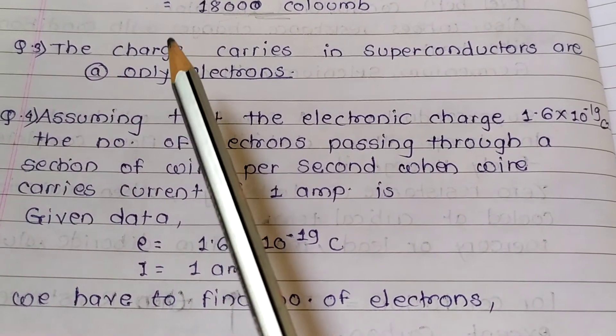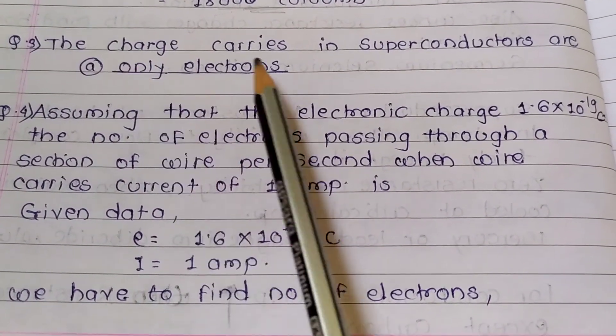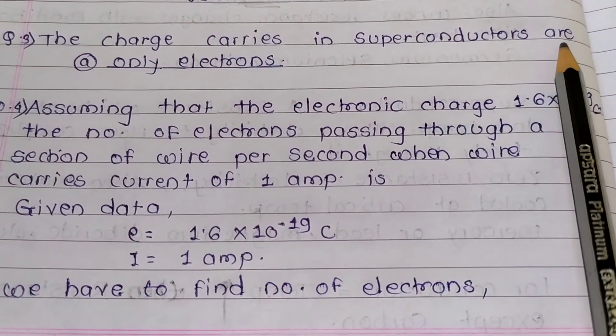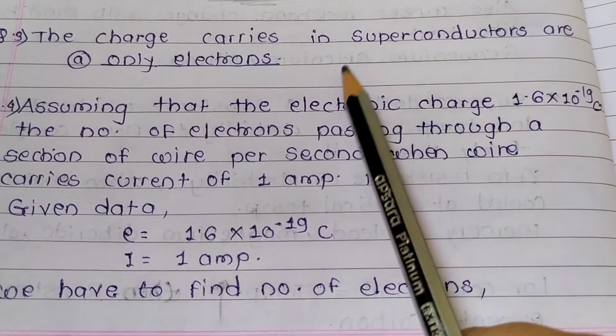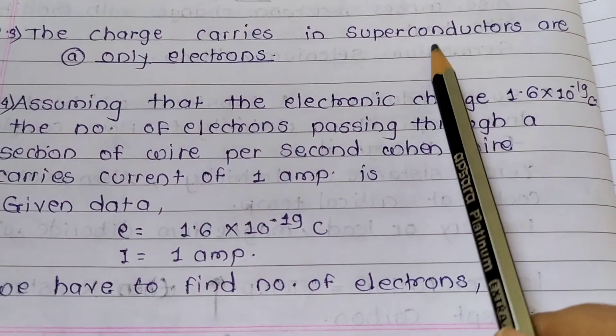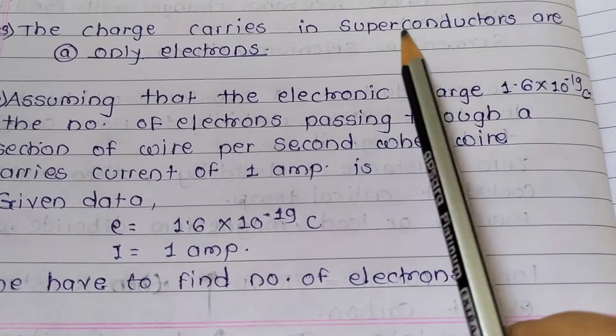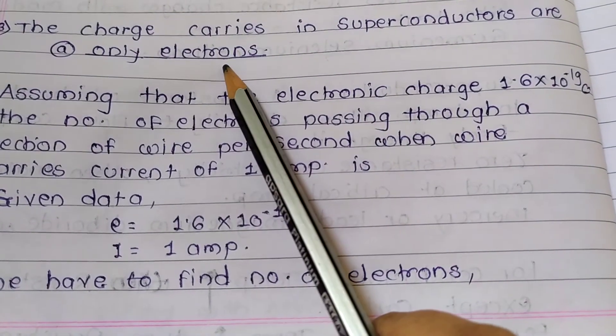The next theory question. The charge carriers in superconductors are? Superconductors means full flow of electricity, means there are more electrons, number of electrons. The answer is electrons only.